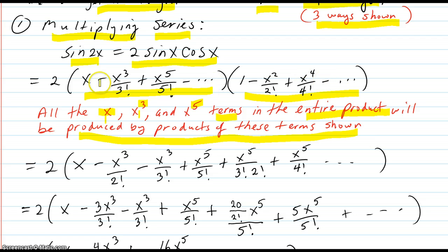So we just multiply them. x times 1 is x. That's the only way to get the x to the first term. The x³ term, you can get by this times 1 or x times x². That produces these two. The fifth terms, you can get by this times this, this times this, or this times this. Okay, so I've written those down.